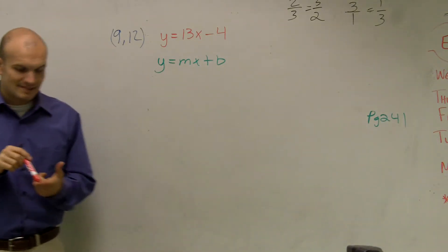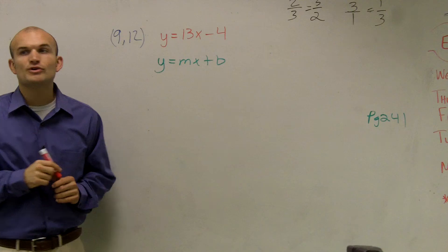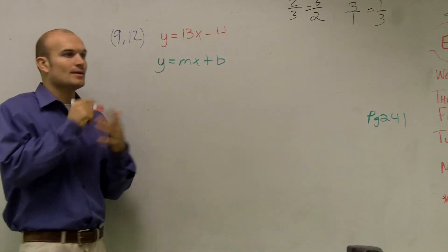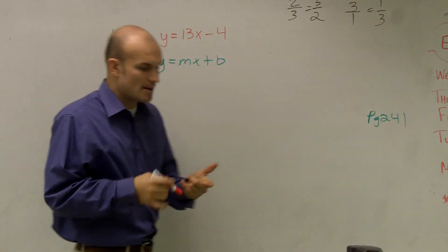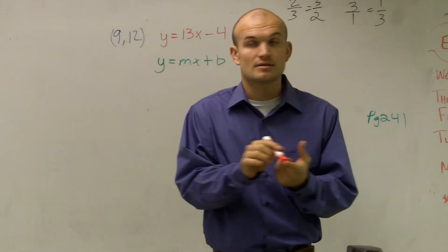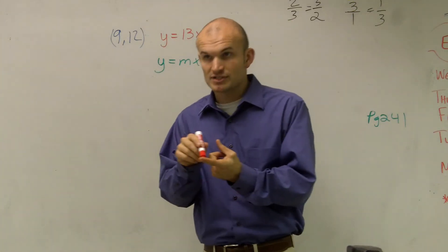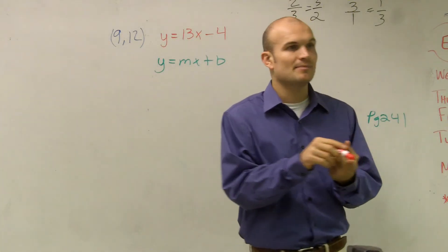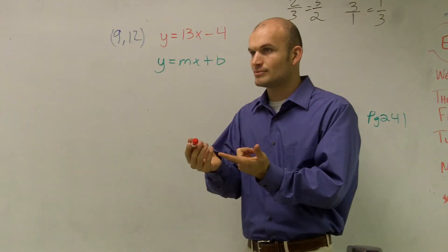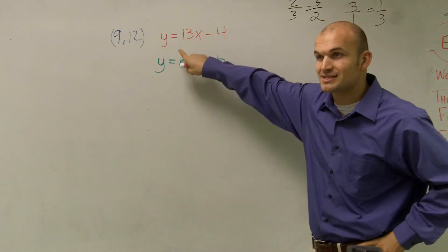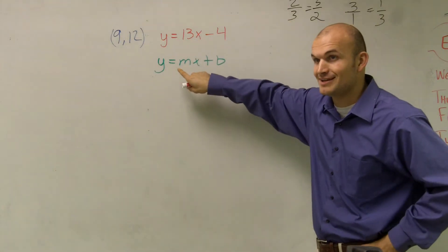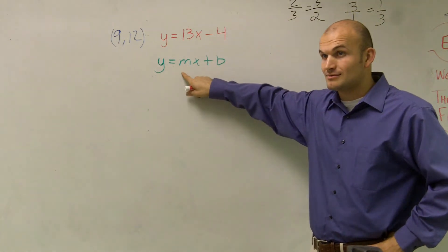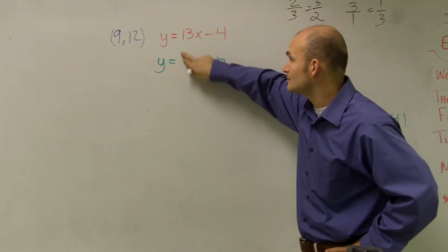The only thing they tell us is that our new equation is going to be parallel. So when I think of parallel, I remember that parallel lines never touch, and they have the same slope. So therefore, if the slope of this line is 13, the slope of this line has to be 13.